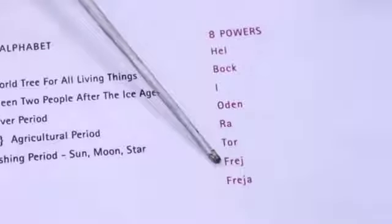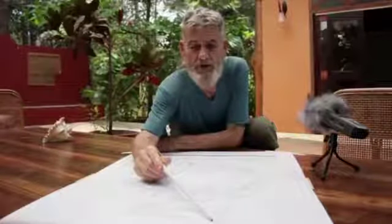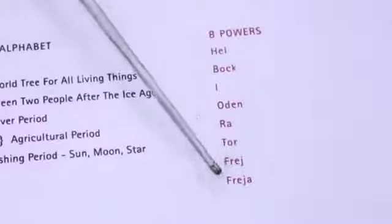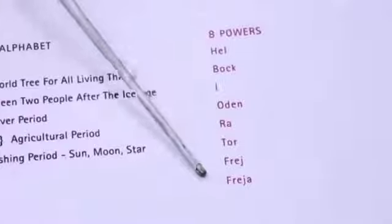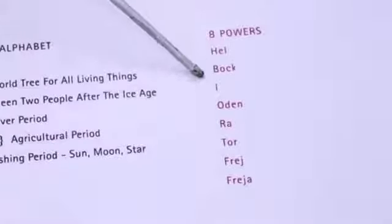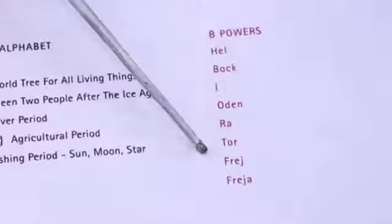The seventh power is Frey — masculine, where Friday comes from, Frey's day. We have one English name called God Frey — the Good Friday, the God Frey. And the eighth power is Freya — the infinity, the last, the eighth power. Freya is the feminine. She is the future. Eight powers: Hel, Bach, E, Udin, Ra, Tur, Frey, Freya.